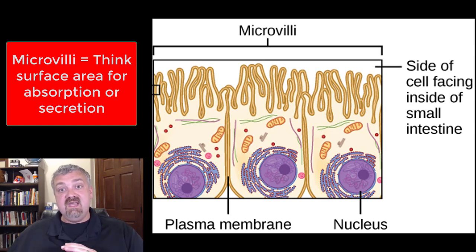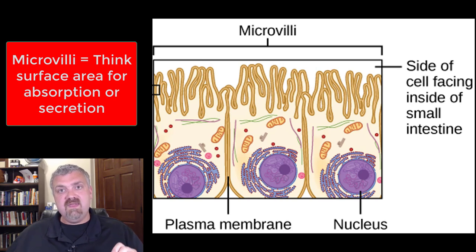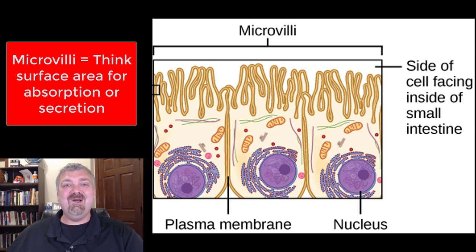So: cilia — think movement of material, and they're going to be longer. Microvilli — they're shorter; think massive increase in surface area for absorption and secretion. I hope that helps. Have a wonderful day. Be blessed.